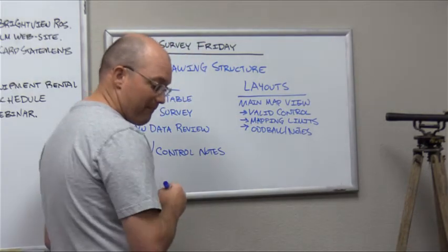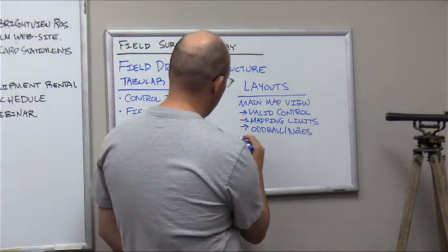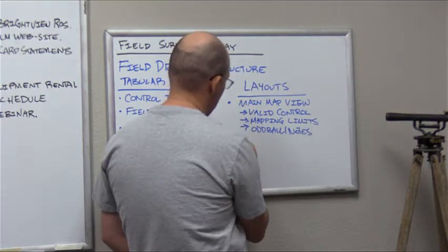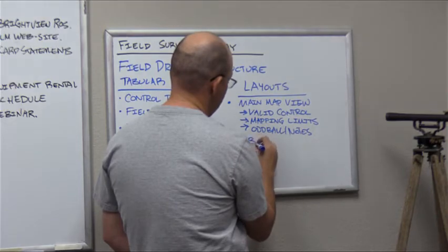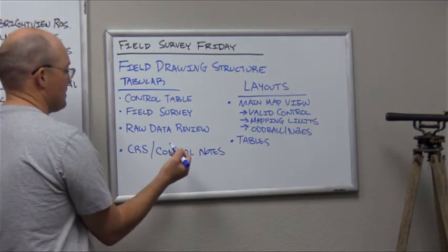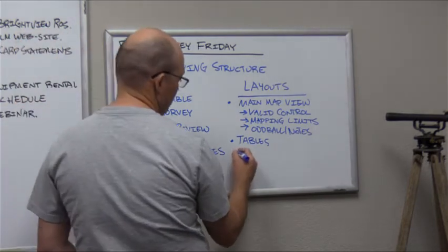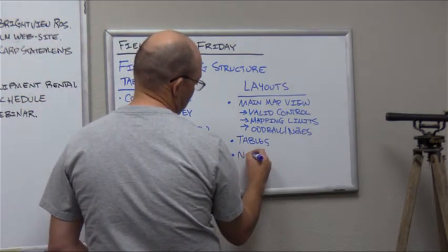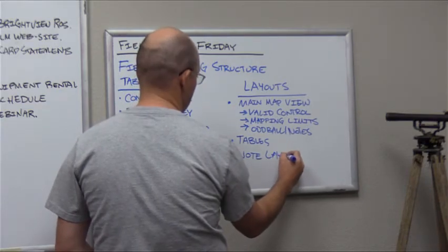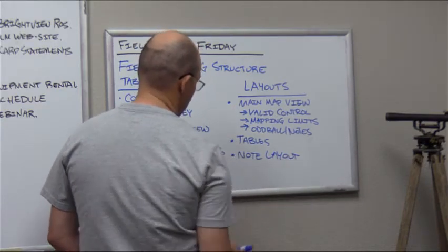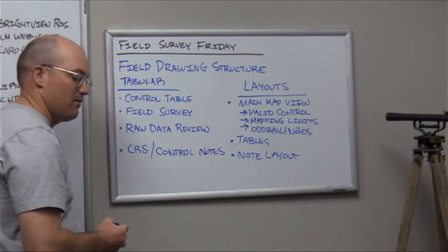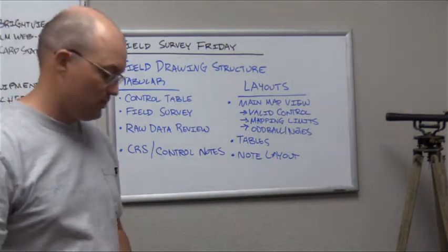Then we have table views — layouts for the tables so you can PDF the control table, field survey table, and raw data review. And then any note layouts, such as a note layout for the CRS and control notes. This should be a summary of the information that's already going into your surveyor report.